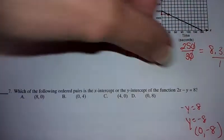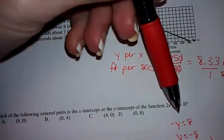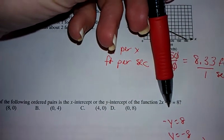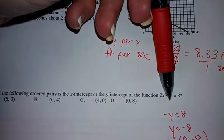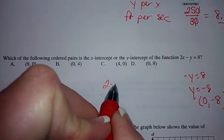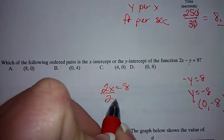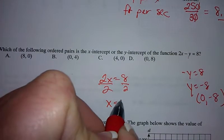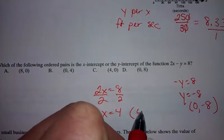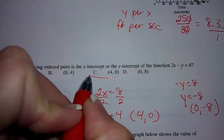So it must be the x-intercept. So if I cover up right here, I'll cover up that. To find the x, cover up the y, I get 2x equals 8. 2x equals 8. Divide by 2. X equals 4. Well, 4, 0. There it is.